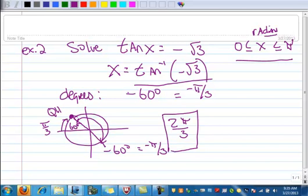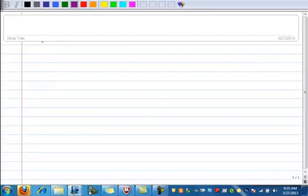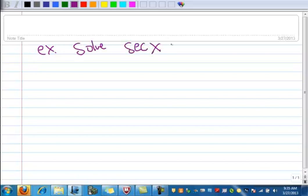Let's do another example. Solve where the secant of x is 1.5, and we want this one to be between 0 and 2π. So we first want to change this to a cosine problem.